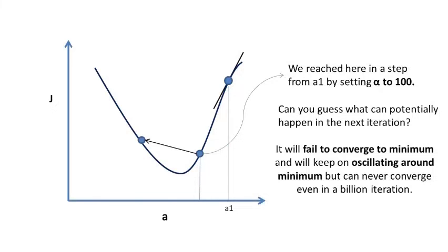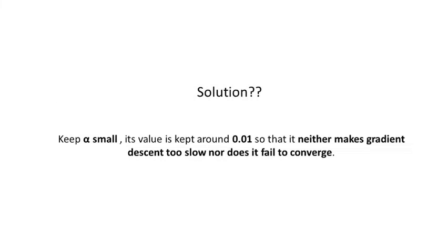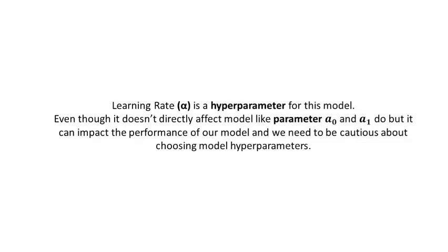It will fail to converge to minimum and will keep on oscillating around minimum, but can never converge, even in a billion iterations. So what is the solution? Keep alpha small. Its value is kept around 0.01 so that it neither makes gradient descent too slow, nor does it fail to converge. Learning rate alpha is a hyperparameter for this model. Even though it doesn't directly affect model like parameters a0 and a1 do, it can impact performance of our model, and we need to be cautious about choosing model hyperparameters.